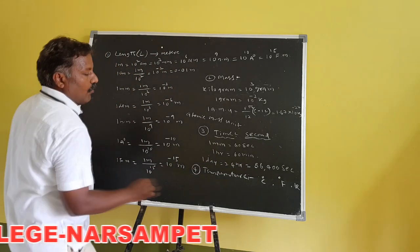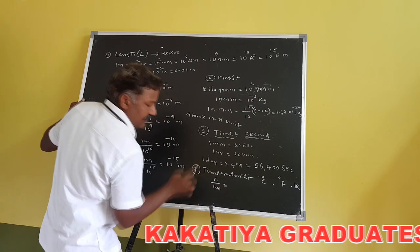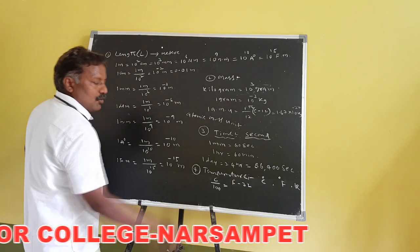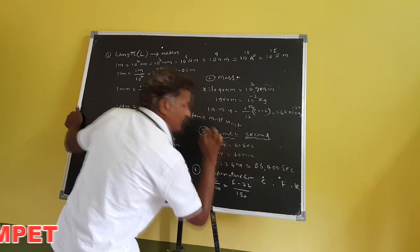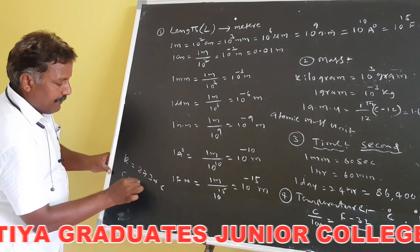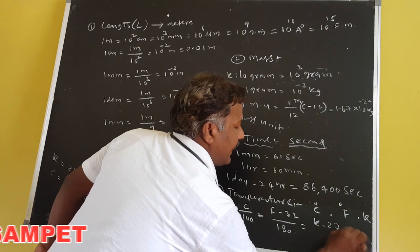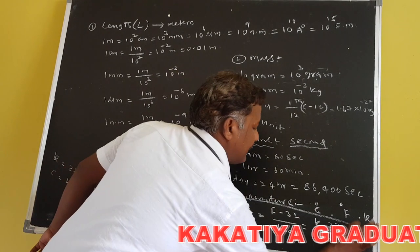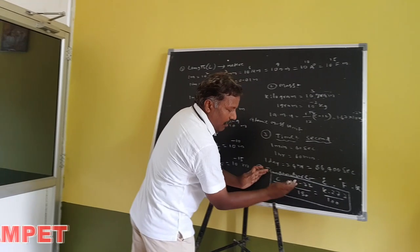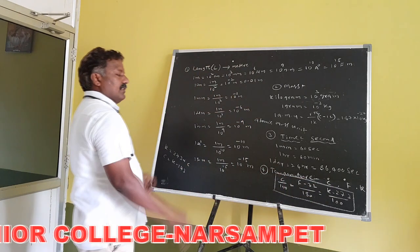The relation between Celsius and Fahrenheit scales is: C/100 = (F − 32)/180. The relation with Kelvin is: K = 273 + C, or C = K − 273. These conversions — Celsius to Fahrenheit, Fahrenheit to Kelvin, Celsius to Kelvin — are very important for competitive exams.